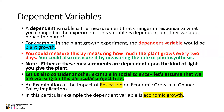Let's look more into dependent variables. Sometimes in some literature, dependent variables are also called a criterion variable. It is the variable that the researcher intends to explain. A dependent variable is the measurement that changes in response to what you change in the experiment. This variable is dependent on other variables — hence the name dependent variable. The occurrence of the dependent variable depends on the explanatory variables, or the independent variable.